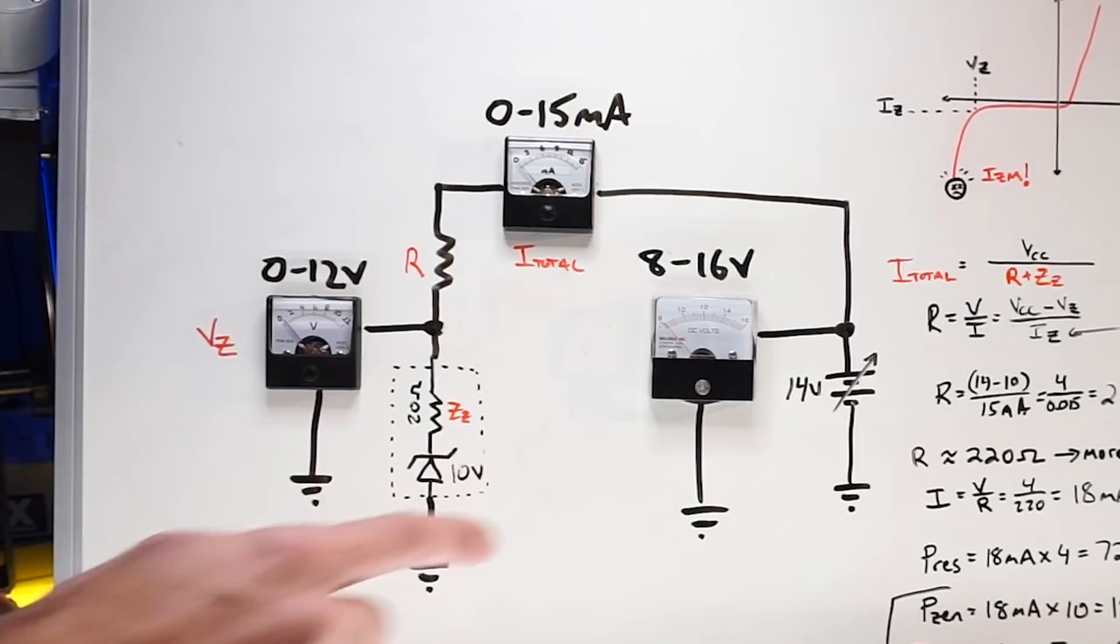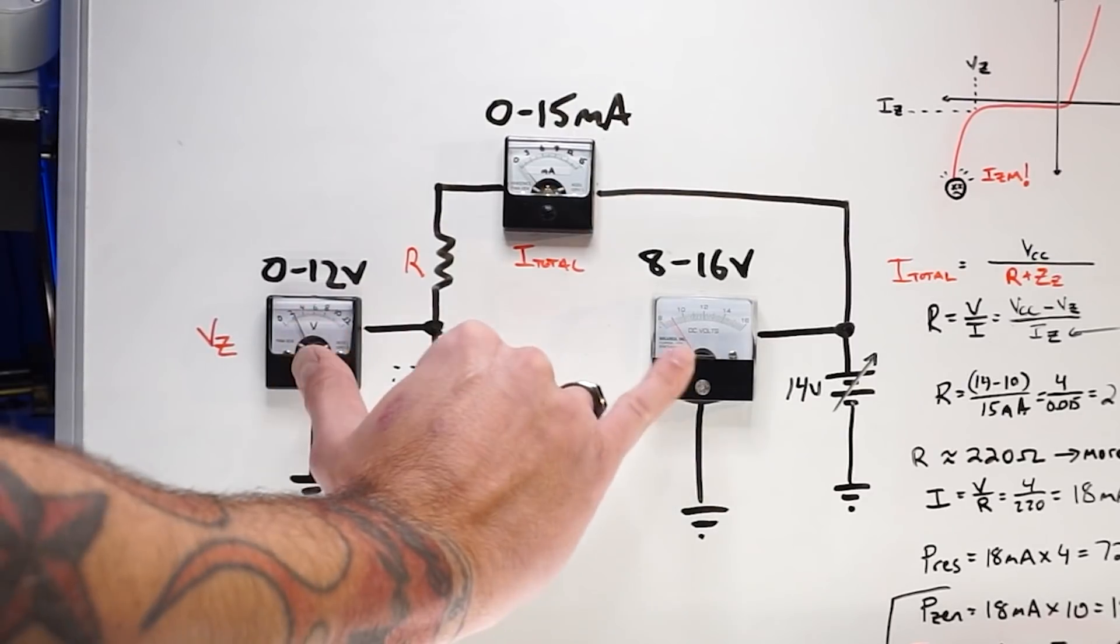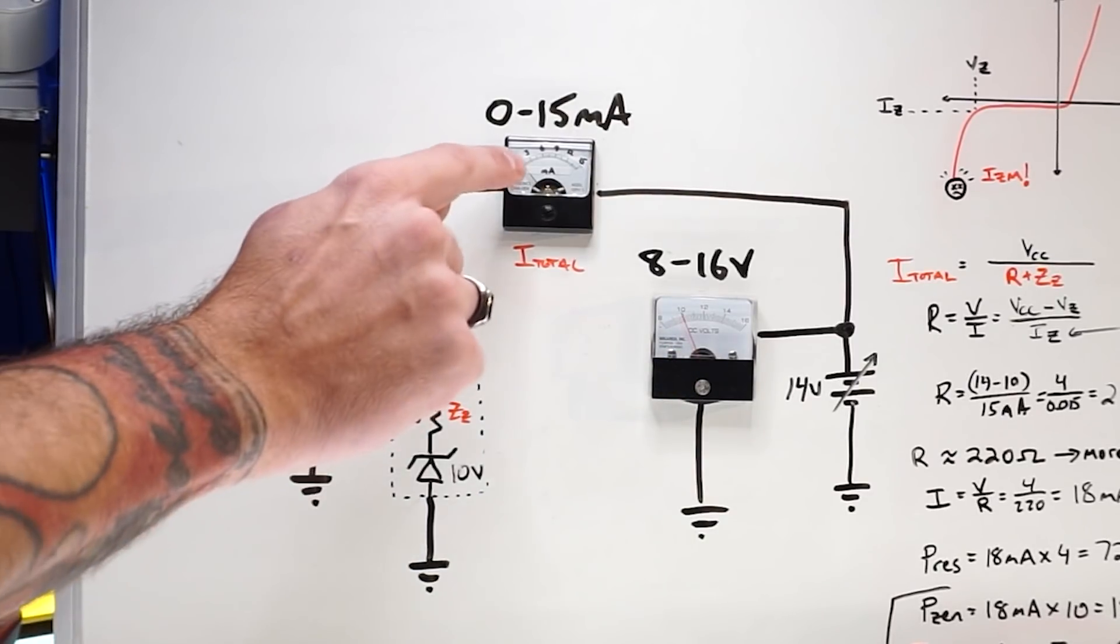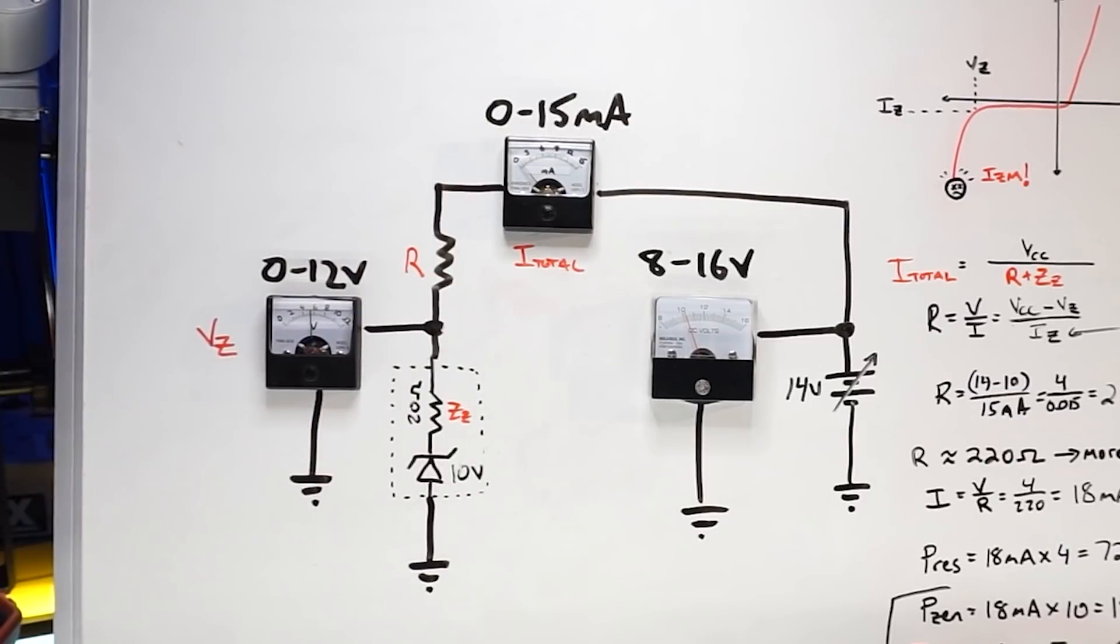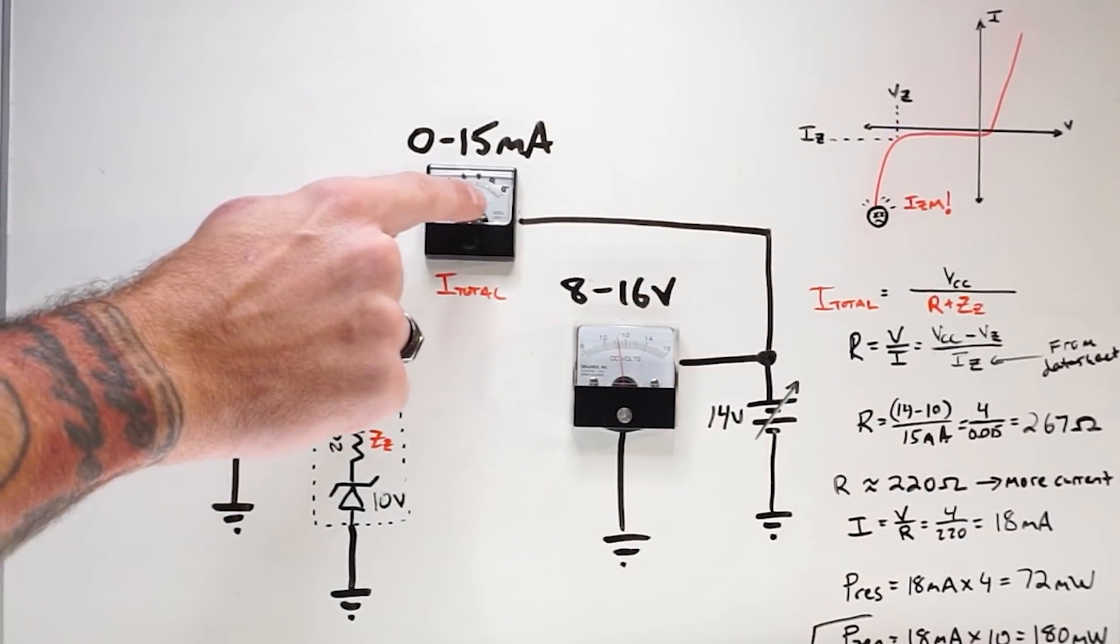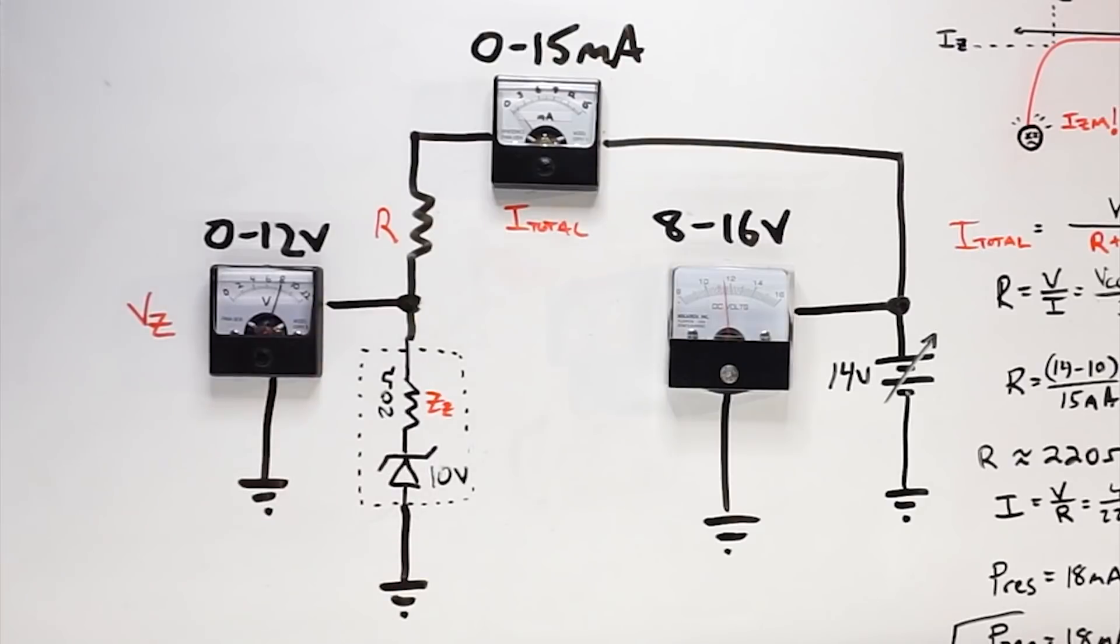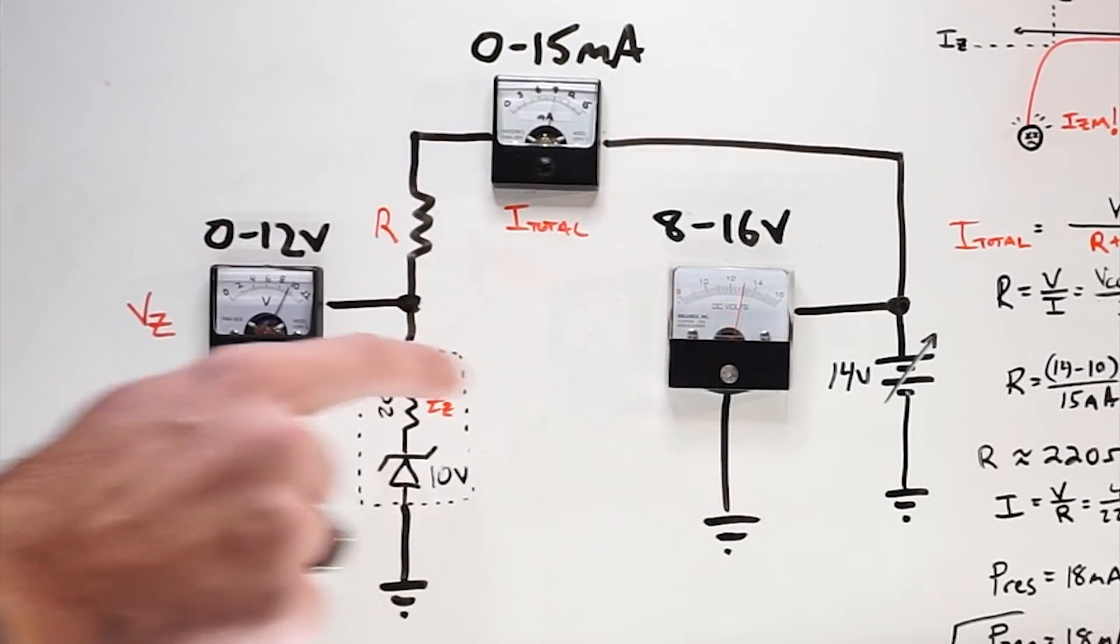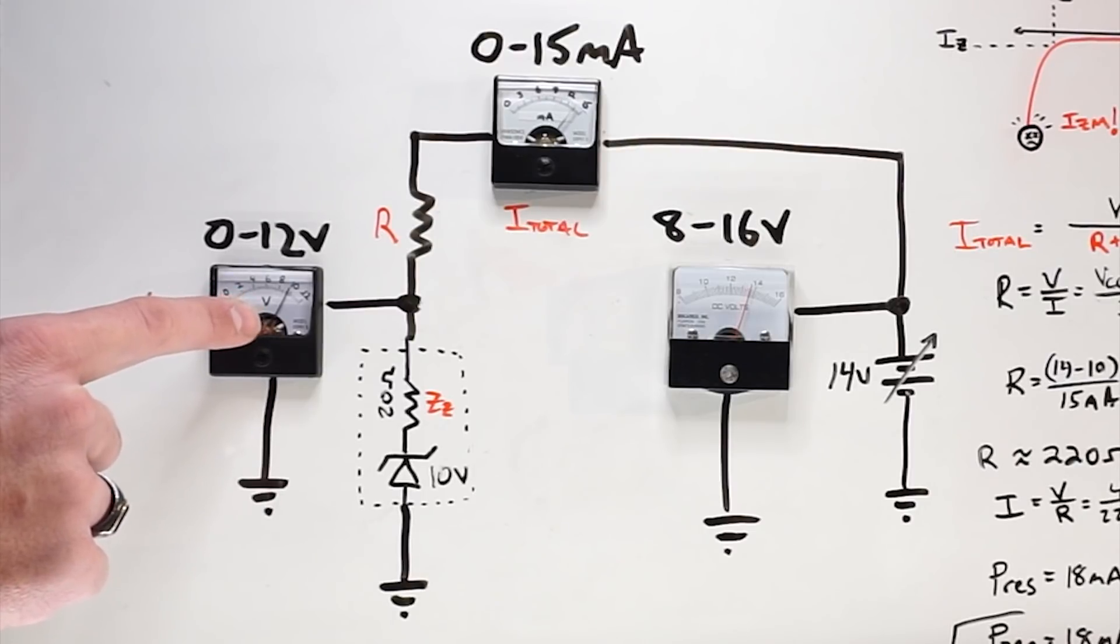Now I'm going to increase my power supply voltage and you'll see these meters here will track each other. Continuously increasing, we're seeing some leakage current. And as we approach 10 volts, we're hitting this knee right here and we'll start to see some current flow through this circuit. And there we go. We're at basically 10 volts. We're seeing the current increase.